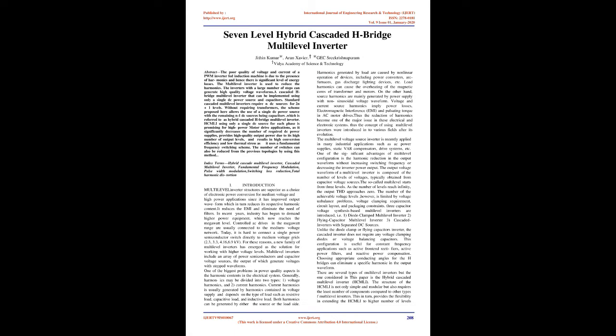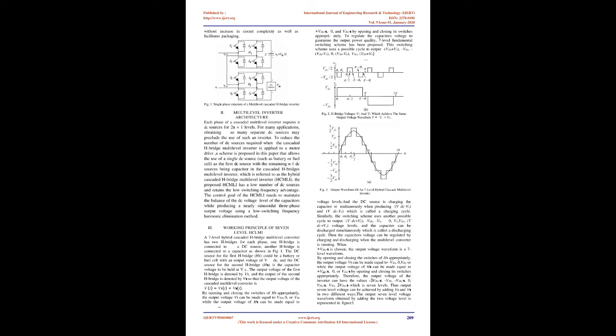Generally, harmonics may be divided into two types: one, voltage harmonics, and two, current harmonics. Current harmonics are usually generated by harmonics contained in voltage supply and depend on the type of load, such as resistive load, capacitive load, and inductive load. Both harmonics can be generated by either the source or the load side.